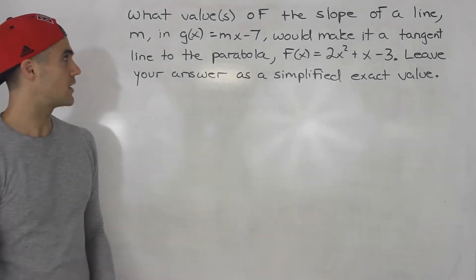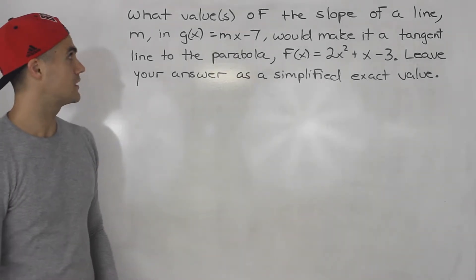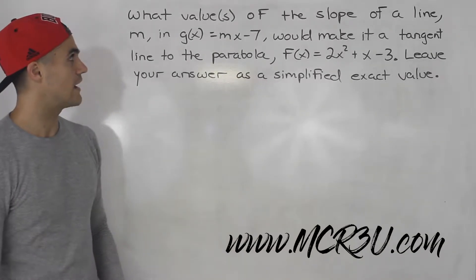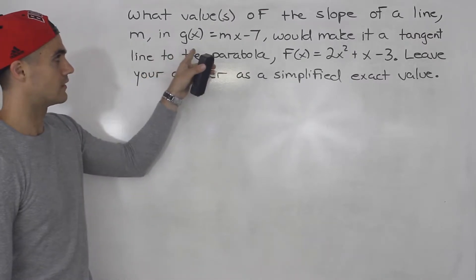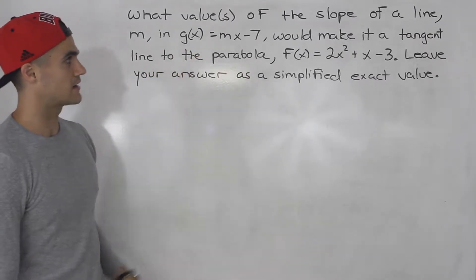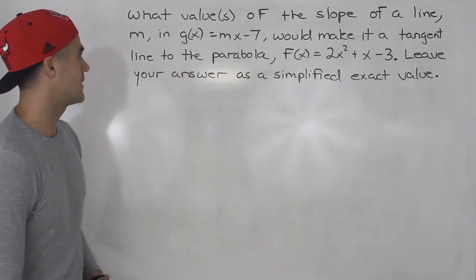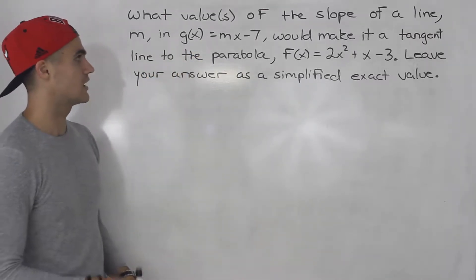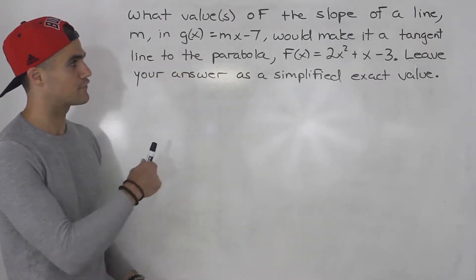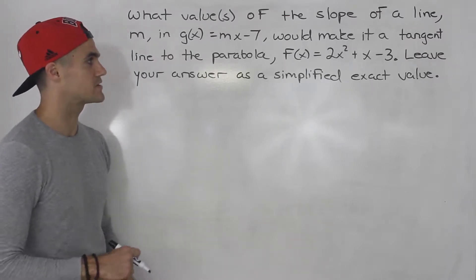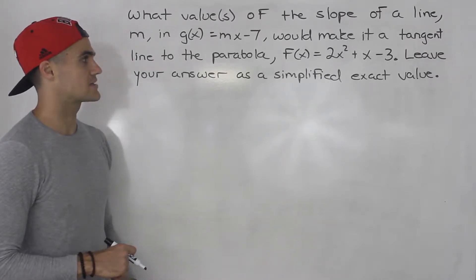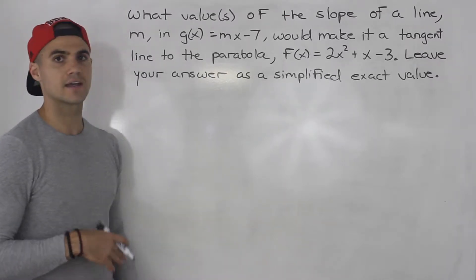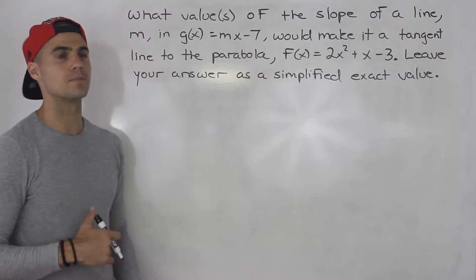What's up everybody? In this question we are asked: what values of the slope of a line m in the line mx minus 7 would make it a tangent line to the parabola f(x) = 2x² + x − 3? Leave your answer as a simplified exact value.